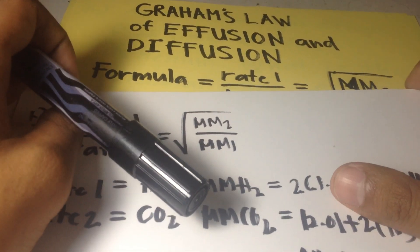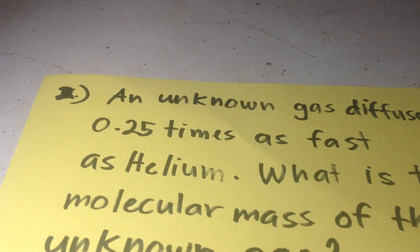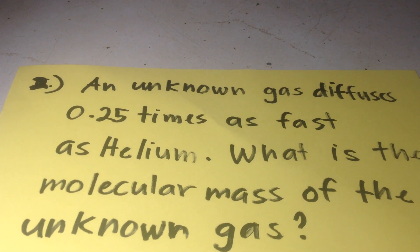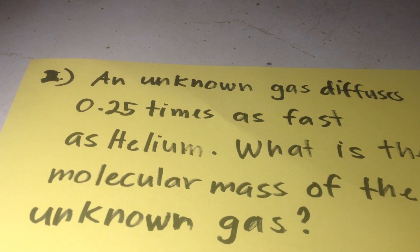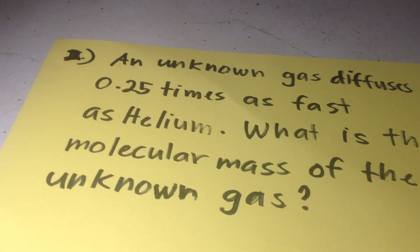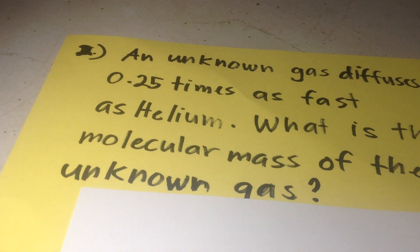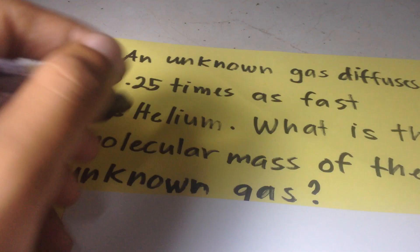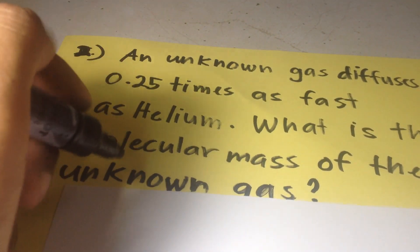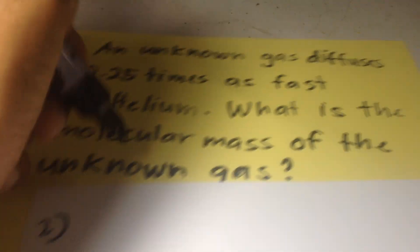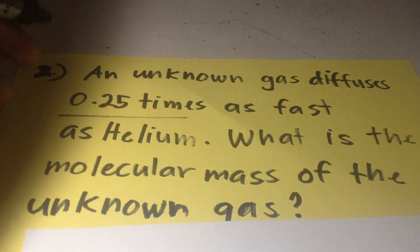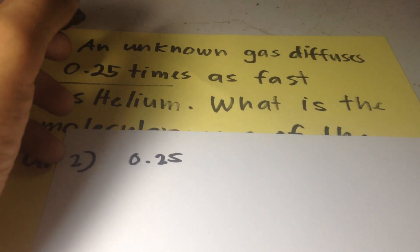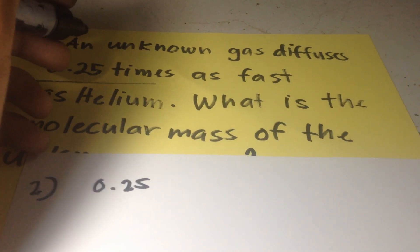Now for problem number 2: an unknown gas diffuses 0.25 times as fast as helium. What is the molecular mass of the unknown gas? We have a given here — 0.25 — and this refers to helium compared to an unknown gas.